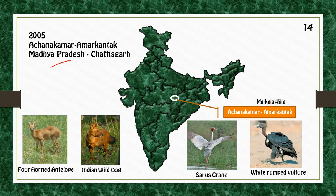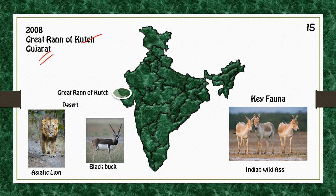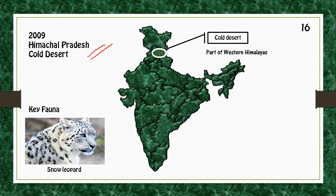On the borders of Madhya Pradesh and Chhattisgarh we have Achanakmar-Amarkantak biosphere reserve; key fauna include Four-Horned Antelope, Indian Wild Dog, Sarus Crane, and White-Rumped Vulture. In Gujarat we have Great Rann of Kutch; key fauna include Asiatic Lion, Blackbuck, and Indian Wild Ass. In Himachal Pradesh we have Cold Desert; key fauna include Snow Leopard.